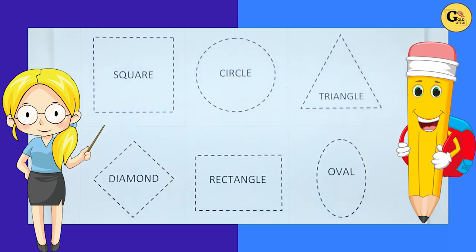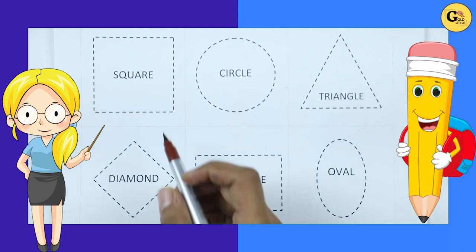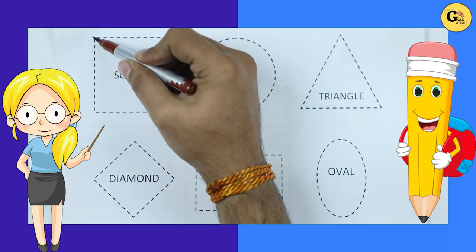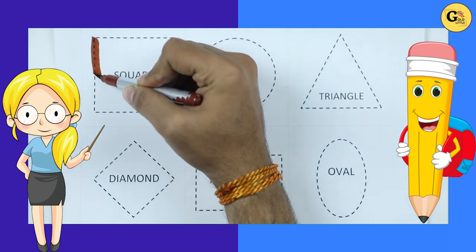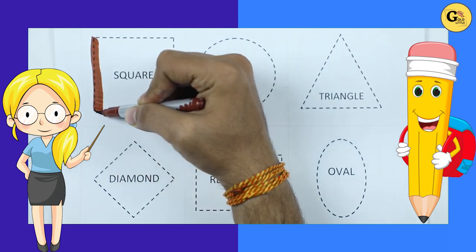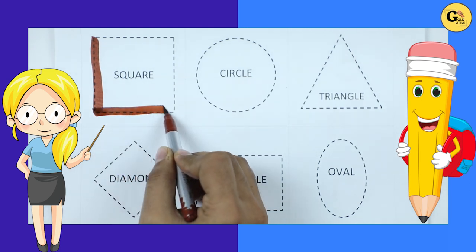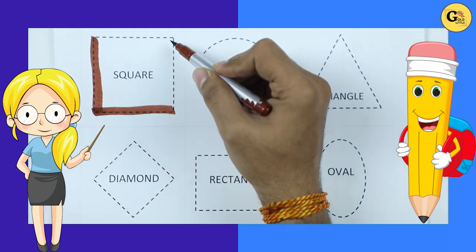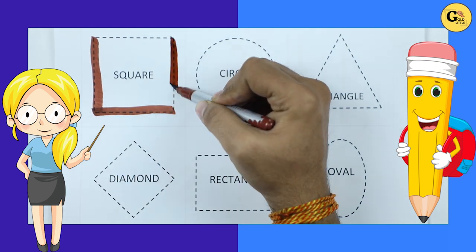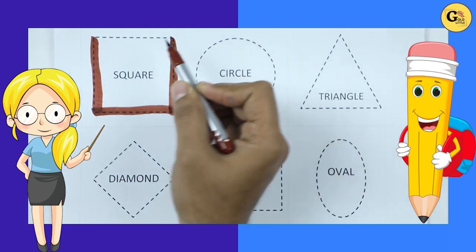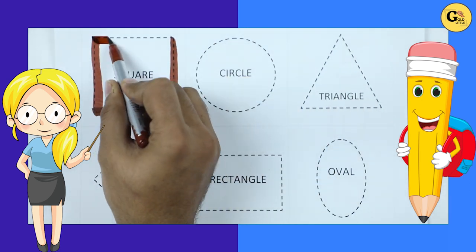It's square. We draw square with brown color. Square.